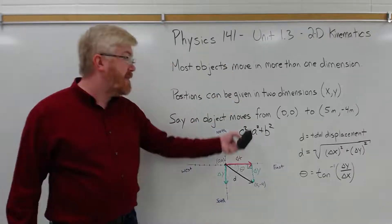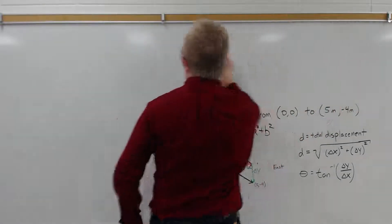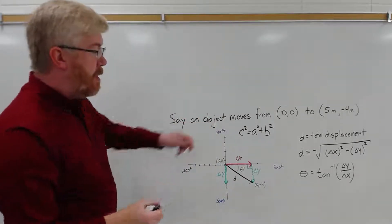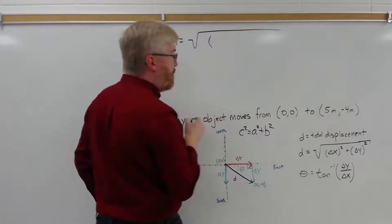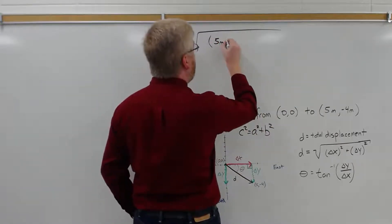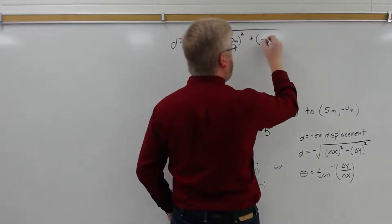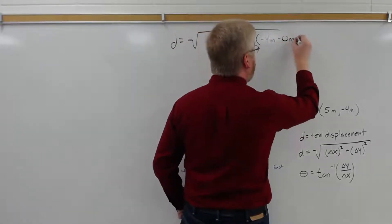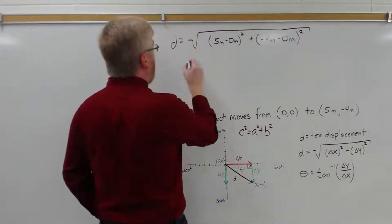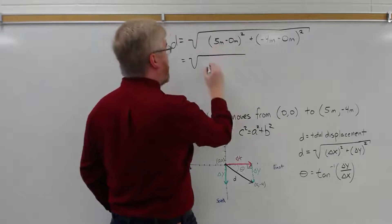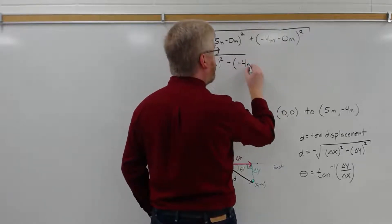So let's actually do, with these numbers, this math. So D is equal to the square root of the x-displacement, which is final minus initial. So it's 5 meters minus 0 meters squared, plus the y-displacement squared, which is minus 4 meters minus 0 meters. Again, final y position minus initial y position squared, square root of everything. Well, that's easy enough to do. 5 minus 0 is 5, so this is 5 meters squared, plus minus 4 minus 0 is minus 4 meters squared.